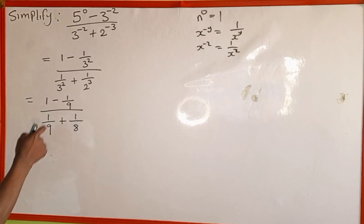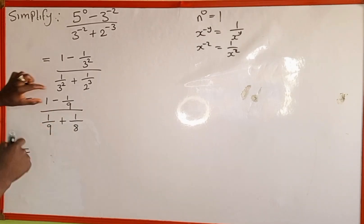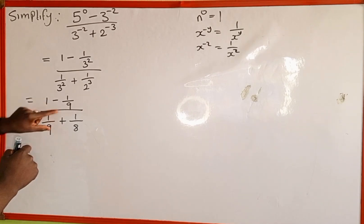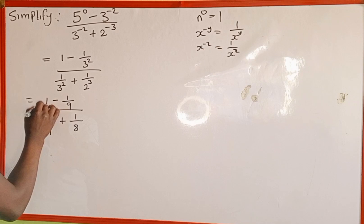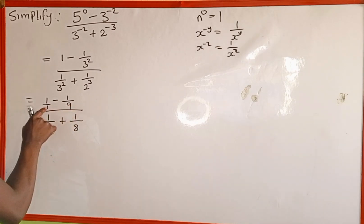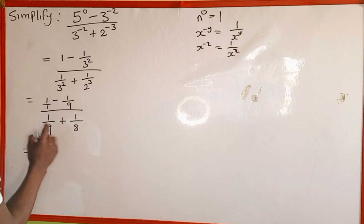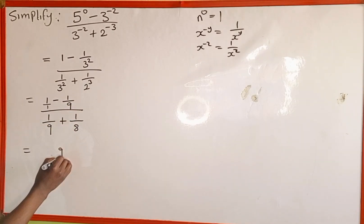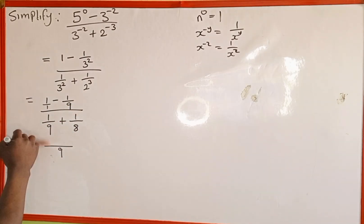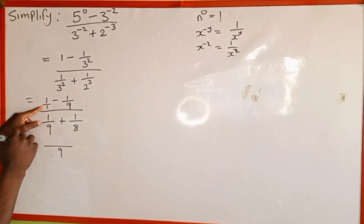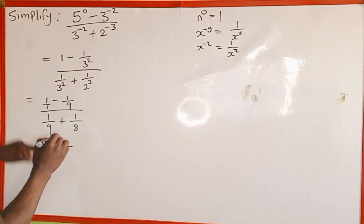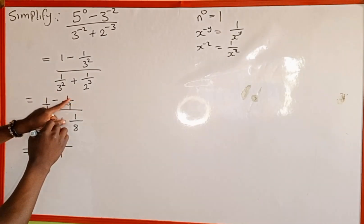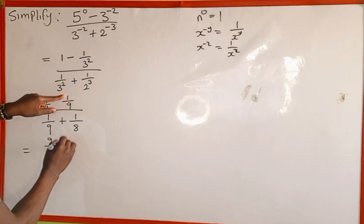We simplify the numerator first. This 1 can be written as 1 over 1. We find the LCM of 1 and 9, which is 9. We draw a division line: 9 divided by 1 is 9, then 9 multiplied by 1 gives us 9. Minus: 9 divided by 9 is 1, then 1 multiplied by 1 is 1.